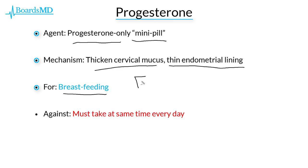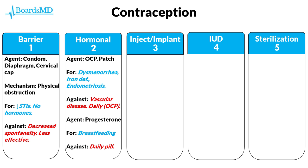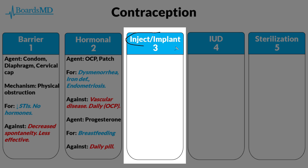One major advantage of the progesterone-only mini pill is that it can be used safely in patients who are breastfeeding. This contrasts with agents containing estrogen, which is believed to alter the contents of breast milk. Progesterone-only agents are also helpful in that, unlike combined oral contraceptives, they lack the estrogen component that increases the risk of thromboembolic events. Therefore, the restrictions in smokers over the age of 35 and patients with a history of thromboembolic events do not apply. However, patients are still required to take these at the same time every day.